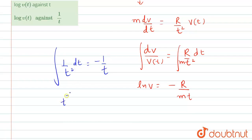So we can write this value t raised to power minus 2 dt. After performing integration, it will become minus t raised to power minus 1, that is minus 1 upon t. As I wrote there, the value of integral dt upon t square is minus R upon mt.